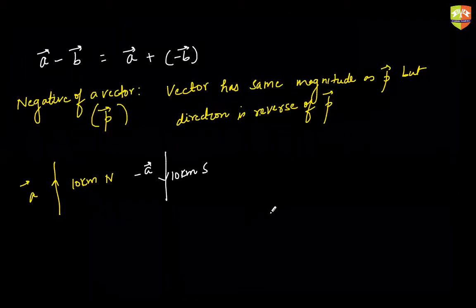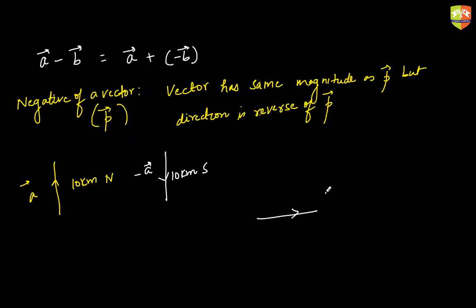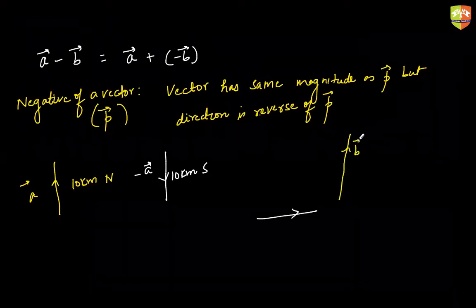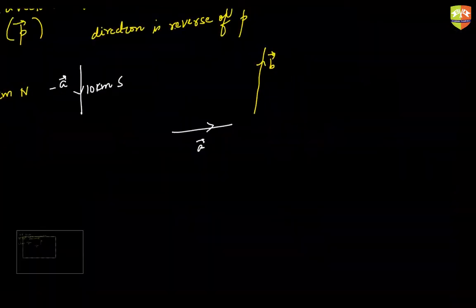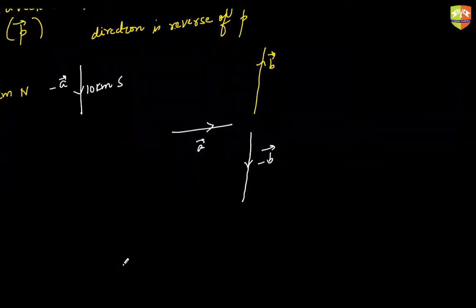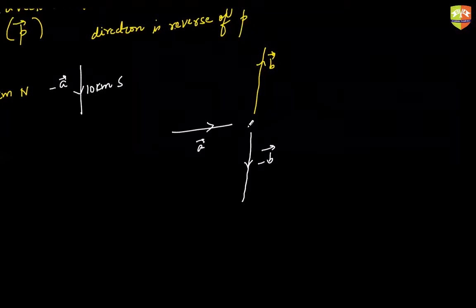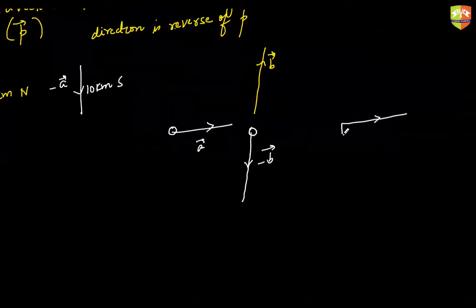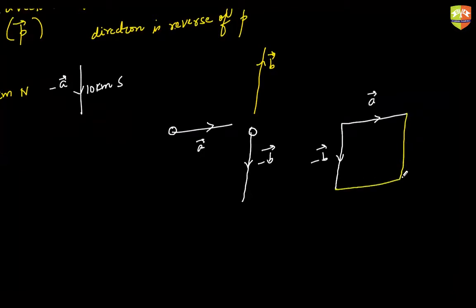To find A minus B, first reverse the direction of vector B to get minus B, then follow either the triangle law or parallelogram law of addition. Using the parallelogram law, make A and minus B co-initial, then complete a parallelogram. The resulting vector will be your A minus B vector.